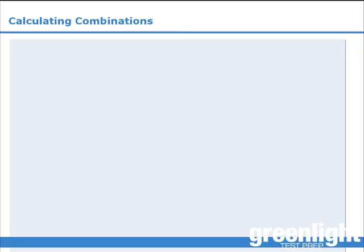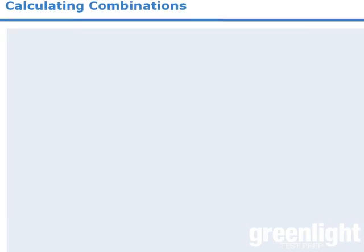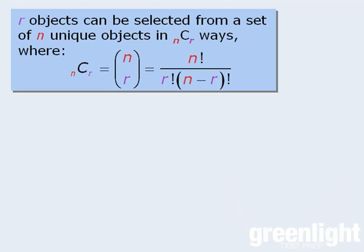In this lesson, we'll look at a quick way to calculate combinations. We can use it to determine the number of ways to select R objects from N unique objects when the order of the selected objects does not matter.